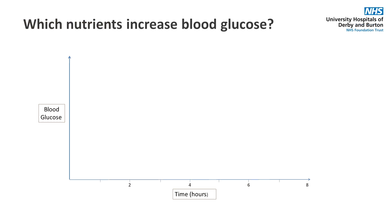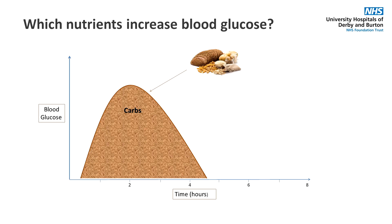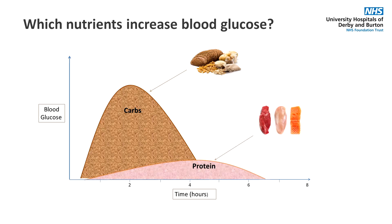Now let's have a look at the different nutrients and their effect on blood glucose. As you can see, carbohydrate is broken down into glucose and absorbed into the bloodstream soon after it is eaten. Protein foods are not immediately broken down into glucose and so have a minimal effect on our blood sugar. The same can be said for foods which are mostly fat. Eating carbohydrate foods in combination with protein and fat can even slow down the absorption of glucose into the bloodstream.